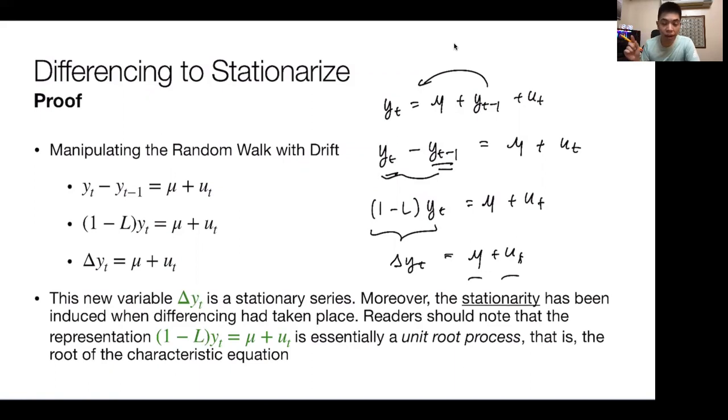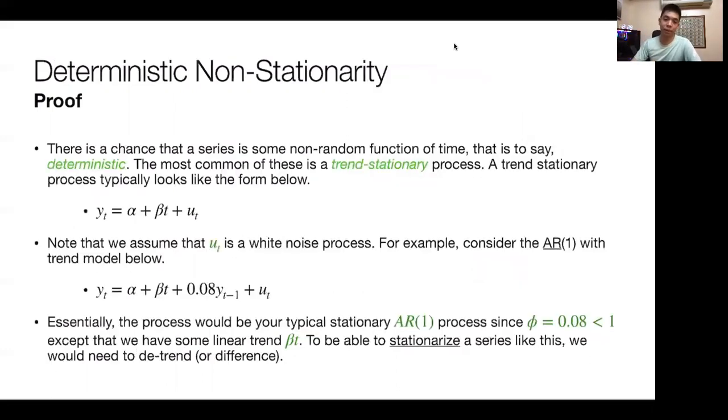Moreover, the stationarity has been induced when the differencing had taken place. Readers should note that the representation, which is this one, is what we refer to as a unit root process. That is trying to derive the root of the characteristic equation, which would be basically when we do this 1 minus z, you'd find that the root is equal to 1, which imputes a non-stationary series at that level.